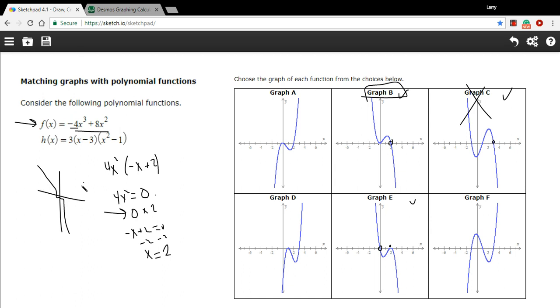All right, let's look at our second one. So we've got h of x equals 3 times x minus 3 times x squared minus 1. Let's find the degree and the sign of the leading coefficient. If we were going to multiply these out, our first term, we'd get 3 times x times x squared, so that would be a positive 3x cubed. So this is going to be a cubic function, an odd function with a positive leading coefficient.